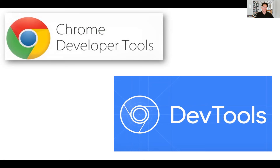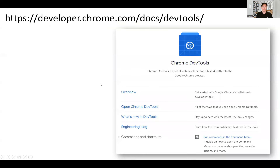I chose this topic because I remember when we started out with Web Development 130, I thought to myself that I wished there were a way to see what my code is doing without having to use a live server. There has to be a way to see what's going on. Chrome developer tools is the perfect solution. The information I'm going to share is mainly from the developer.com website.